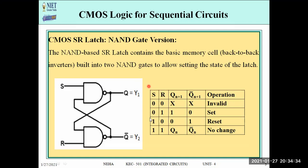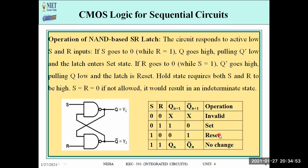We have a truth table here. For S=0, R=0: invalid state. For S=0, R=1: Q=1, which is the set state. For S=1, R=0: Q=0, which is the reset state. For S=1, R=1: the output is the previous value, meaning there is no change.